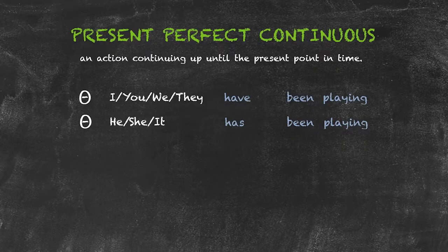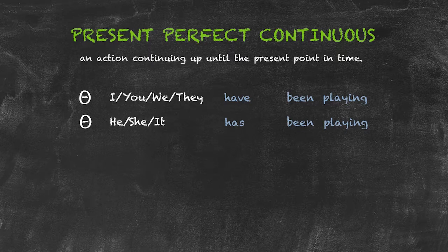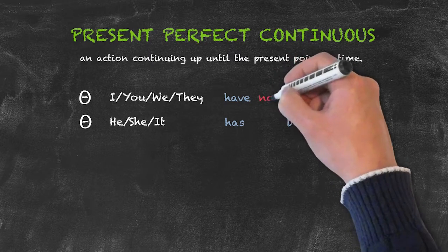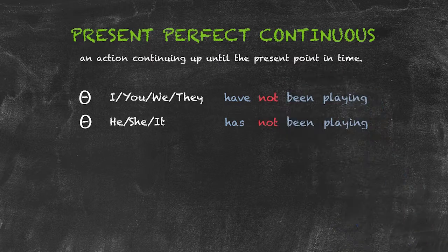The negative form of the present perfect continuous remains the same as the positive form, and we simply add not in between our two helping verbs have and be.